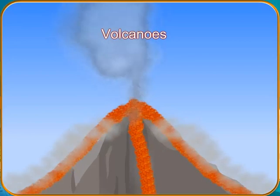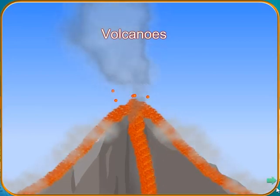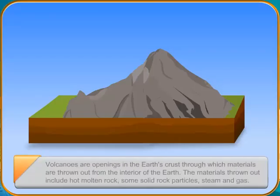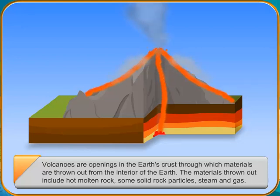Volcanoes are openings in the Earth's crust through which materials are thrown out from the interior of the Earth. The materials thrown out include hot molten rock, some solid rock particles, steam and gas.